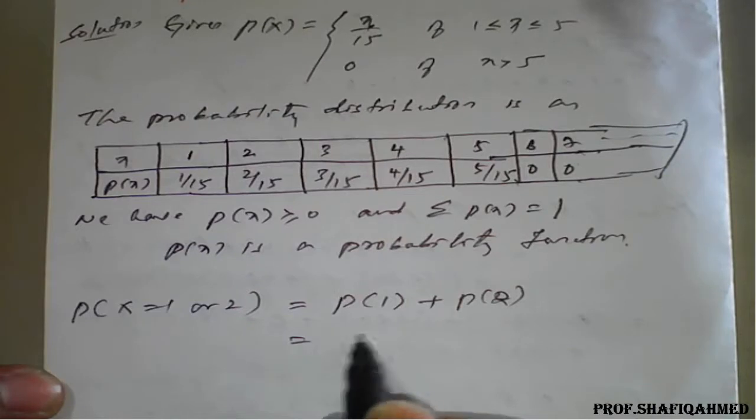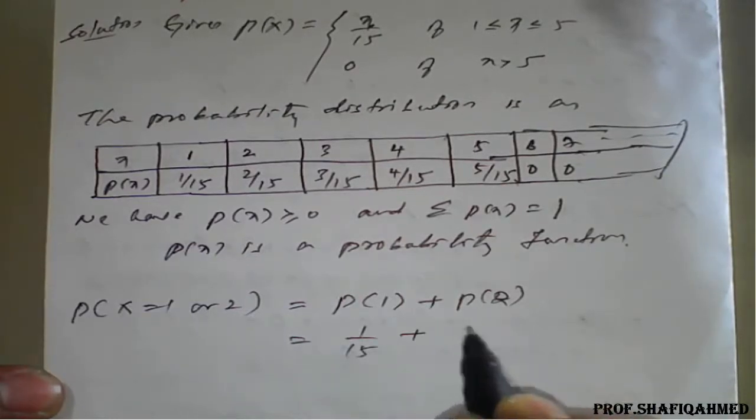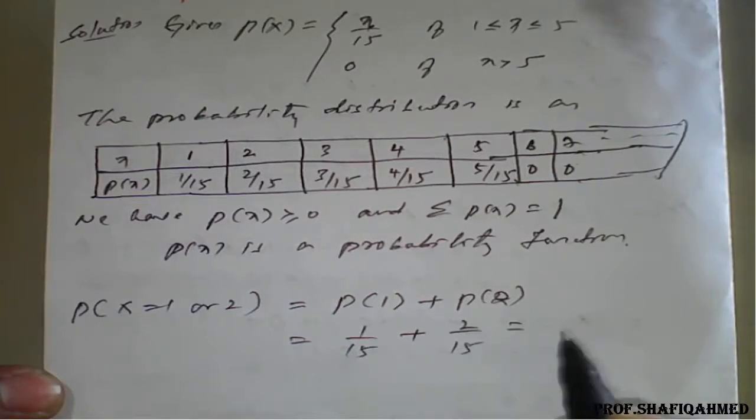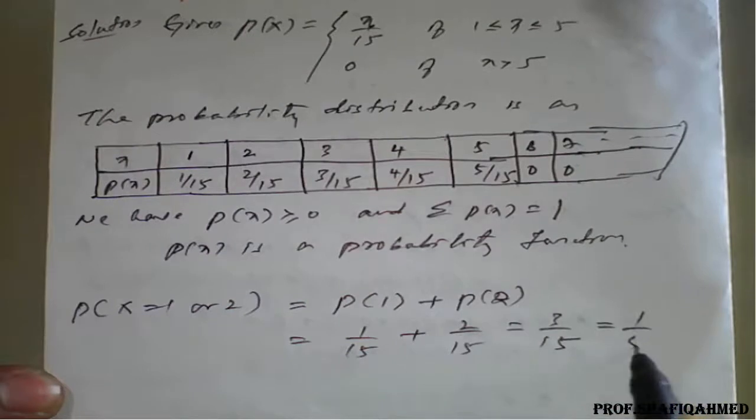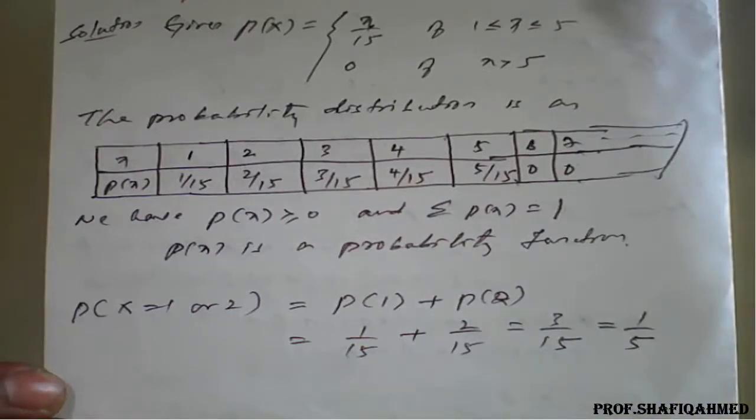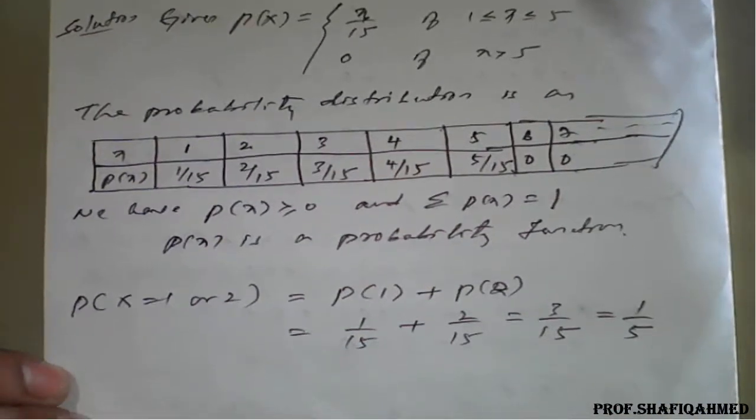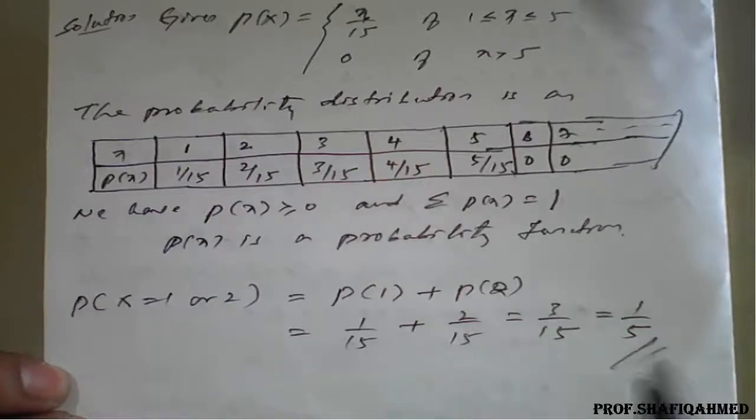What is P of 1? It is 1 upon 15 plus P of 2 is 2 upon 15 which is nothing but 3 upon 15 or you can write this as 1 upon 5. This is the solution.